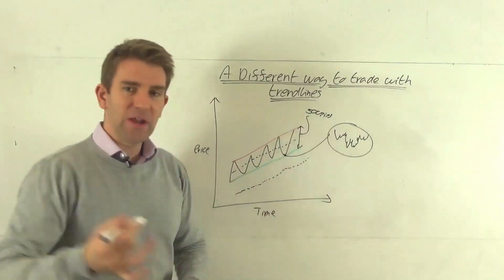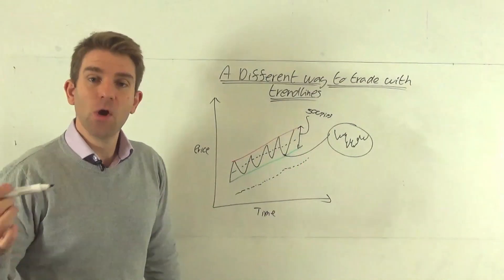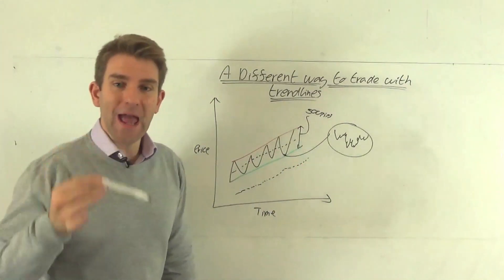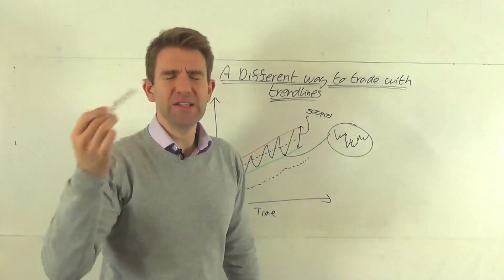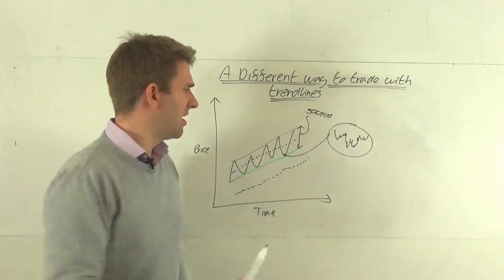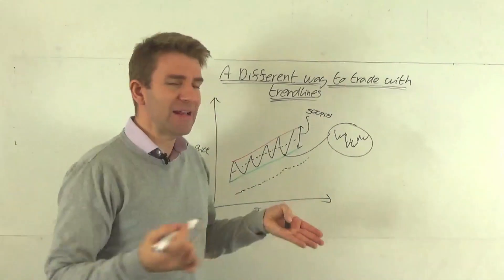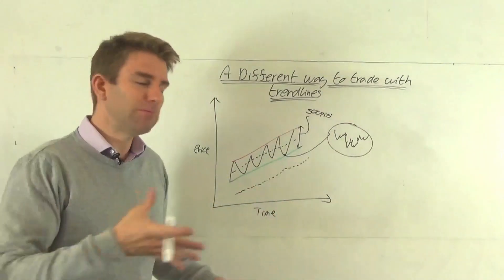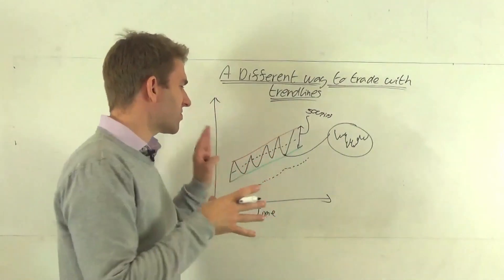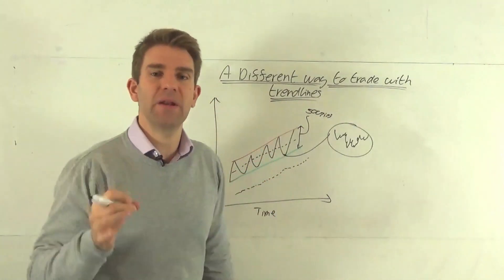Then our thesis should be, okay, we want to be buying when everyone else thinks the trend line has broken. Because this might sound counterintuitive. You might say, well, you know, when it breaks we go short, and yes, that is a strategy. But we want to align ourselves with the trend. We want to give the trend the benefit of the doubt.